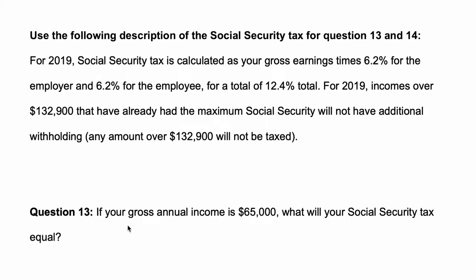Alright, so question 13 says: if your gross annual income is $65,000, what will your social security tax equal?